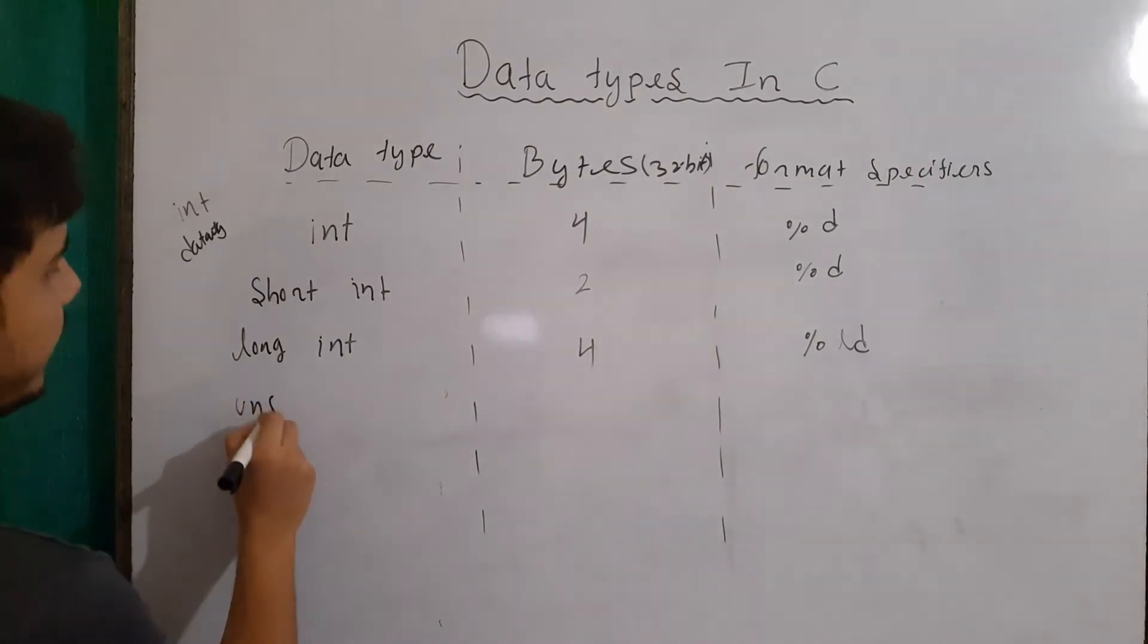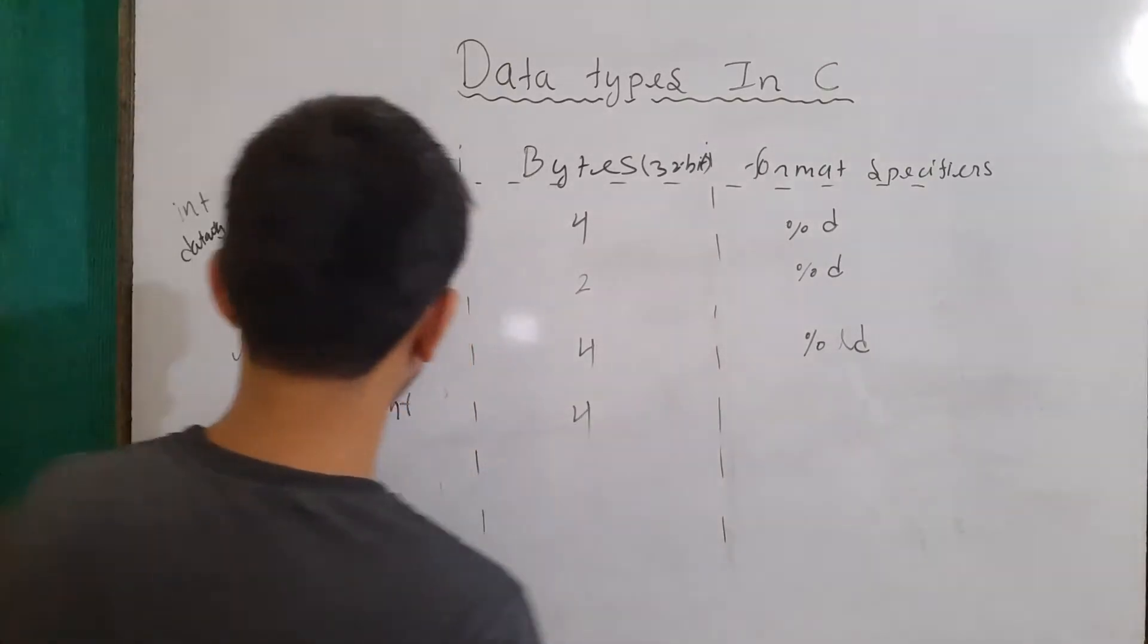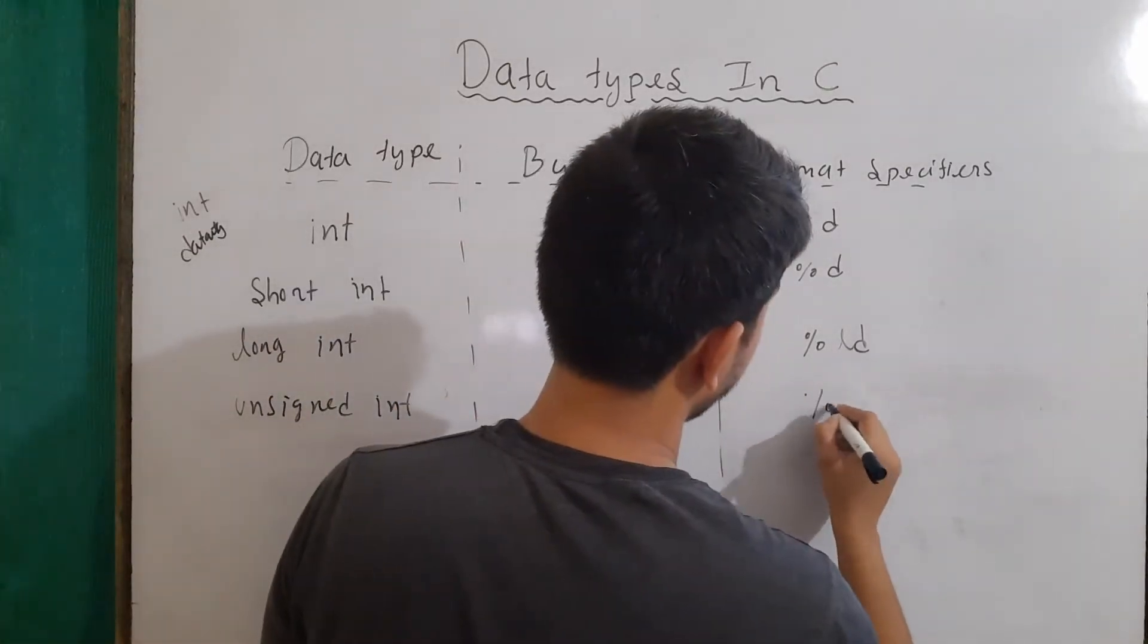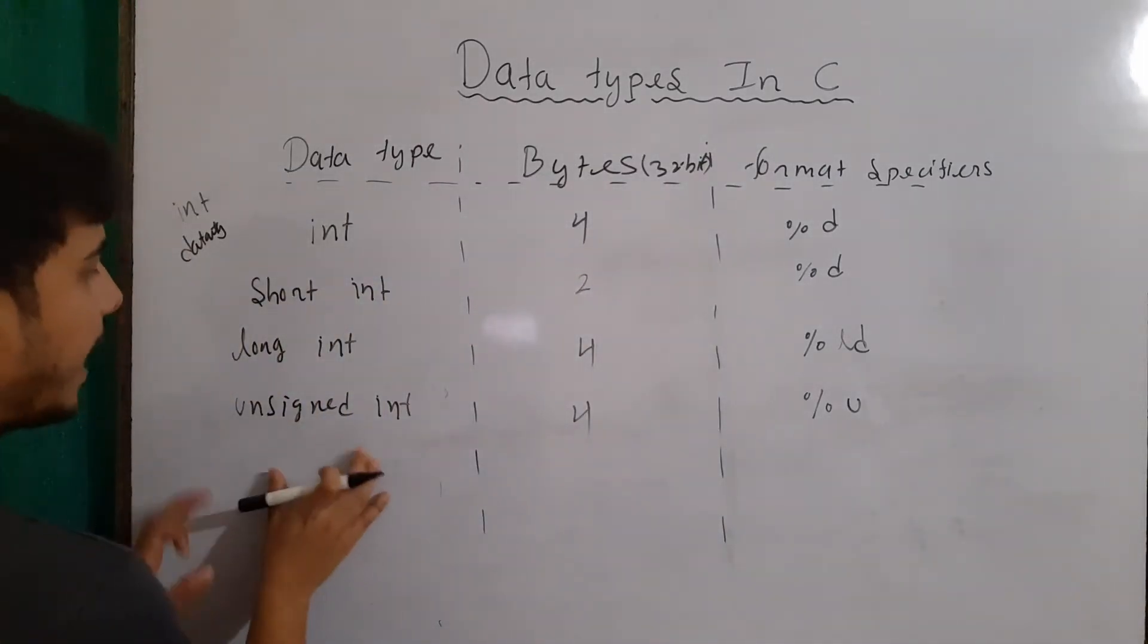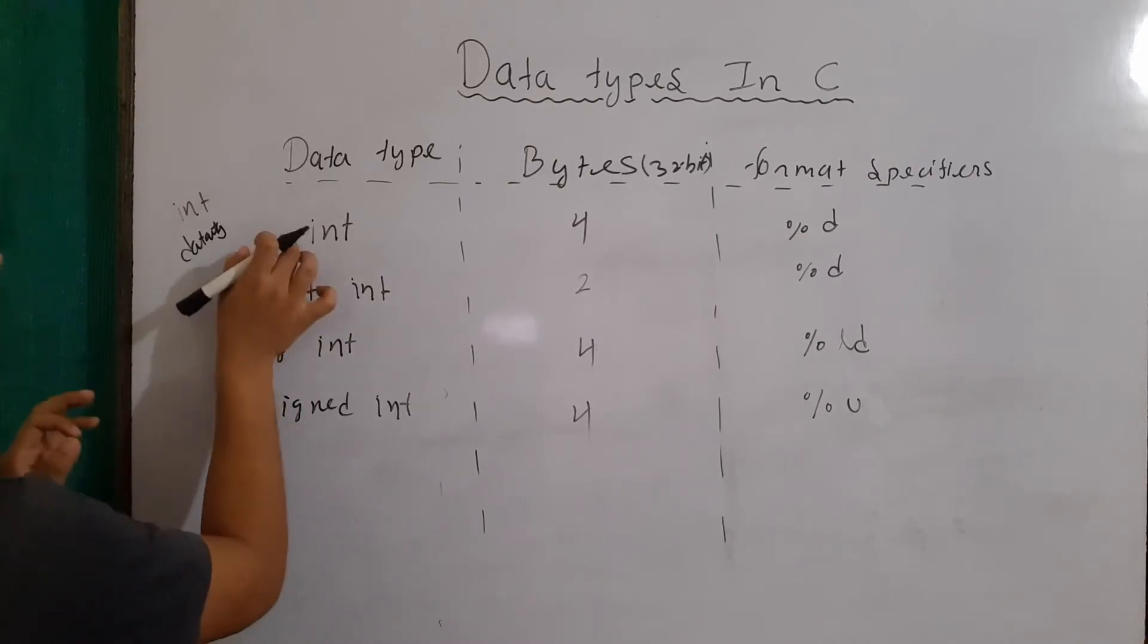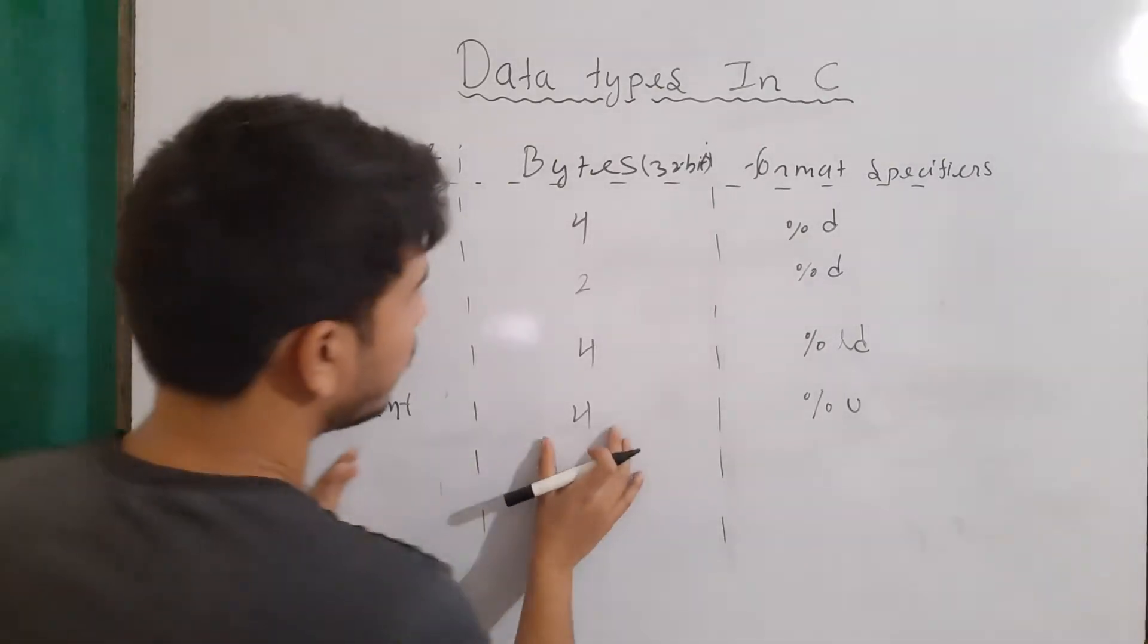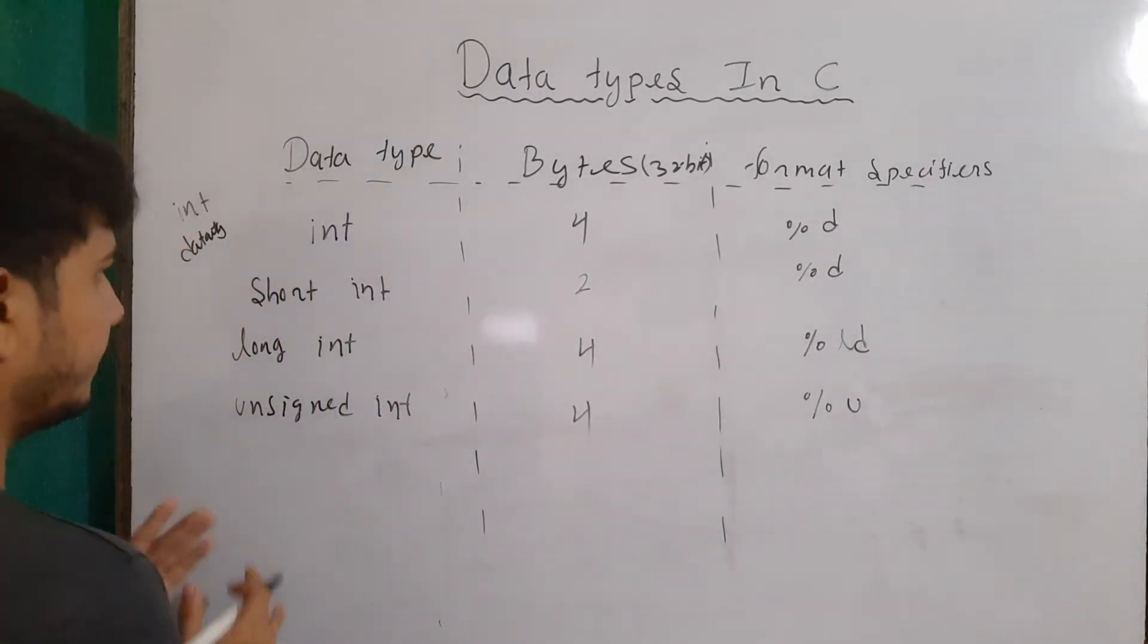So I will write here unsigned int. The bytes will be 4 and the representation will be %u. Similarly, there could be signed int. Now, signed int or nothing writing here is equal. So either I can write signed int or nothing. Only the range of the unsigned integer will increase because there will not be any signed bit.